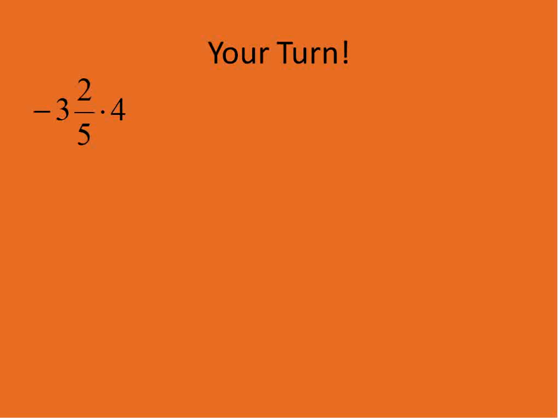From here on out, I'm going to show several examples. You can go ahead and pause the recording and try them on your own. Follow those same steps that I talked about earlier. But basically, this is what we're going to do. So I'm converting this into an improper fraction. 5 times 3 is 15, plus 2 is 17. So I have negative 17 over 5 times 4, which can be written as 4 over 1. Now I'm going to multiply 17 times 4, which gives me 68, and 5 times 1, which gives me 5.